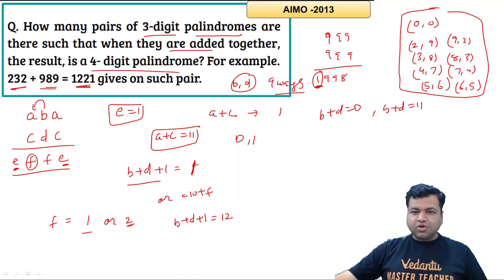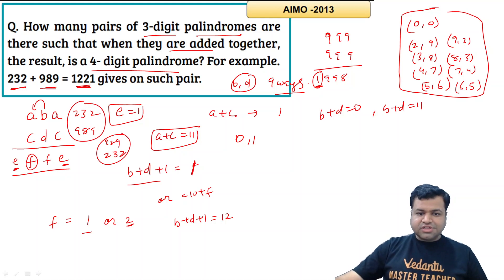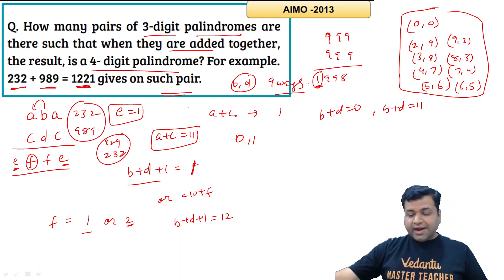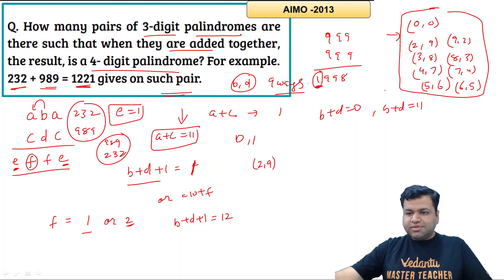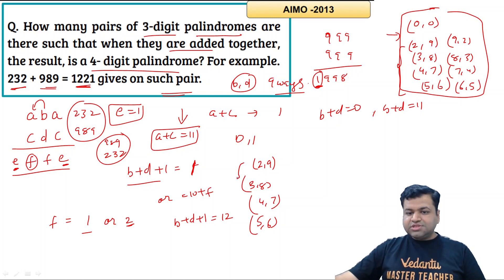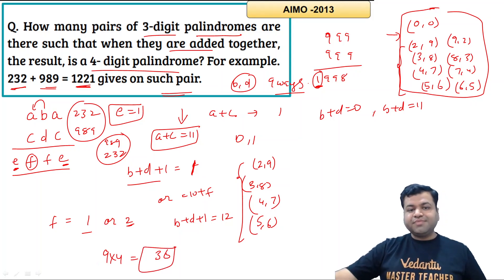Since we are counting pairs (not ordered), we consider distinct unordered pairs. For A + C = 11, the distinct pairs are: (2,9), (3,8), (4,7), (5,6) — four possibilities. B and D can take values in 9 ways. So the total number of valid pairs is 9 × 4 = 36. There are 36 such pairs where both three-digit numbers are palindromes and their sum is a four-digit palindrome.